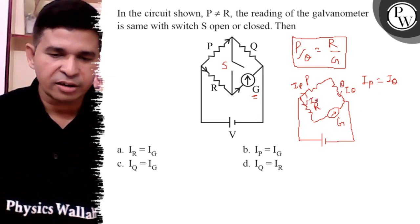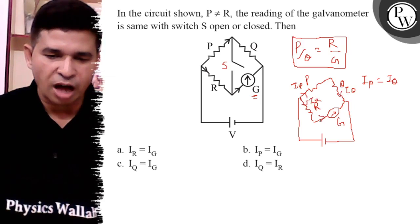Similarly, Ir is equal to Ig because both are in series.